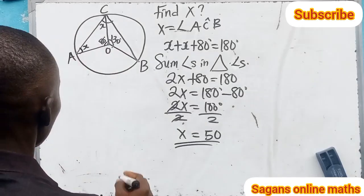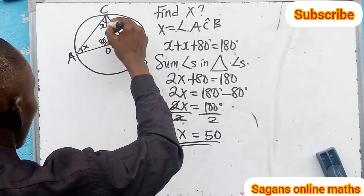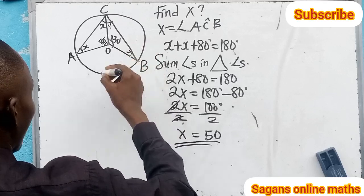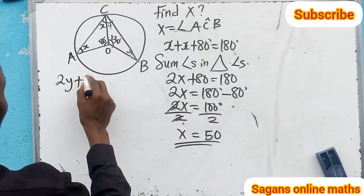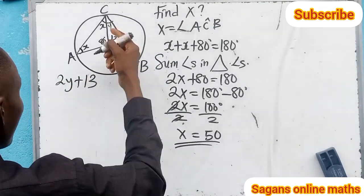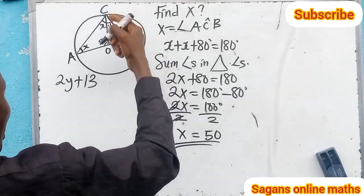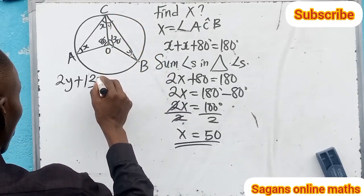If here is also y, and here is also y, that means 2y plus 130 degrees, because this is an isosceles triangle. If here is y, here is also y plus 130 degrees.